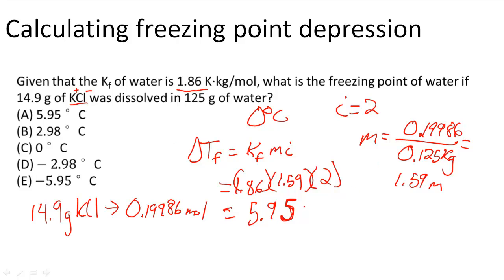The new freezing point of water with this mixture is going to be negative 5.95 because the freezing point goes down and has to get colder, not hotter. So negative 5.95 degrees Celsius is the answer to this problem.